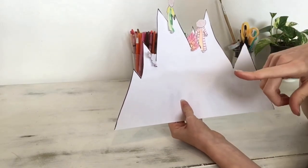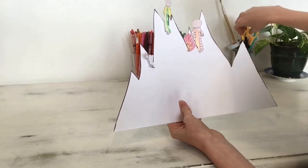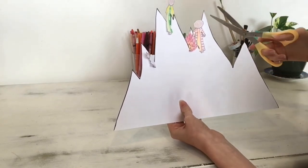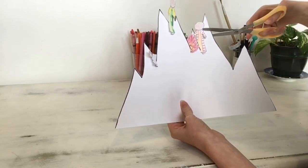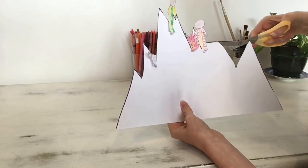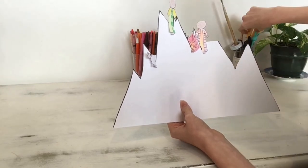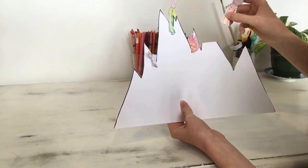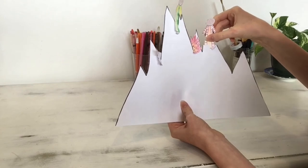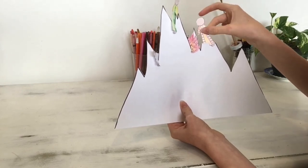Now another thing that you might like to do, you might make it a little bit easier to put your people on, is just cut across one of the big points of your mountain so that you have a flat spot and you can also put them on there like that.